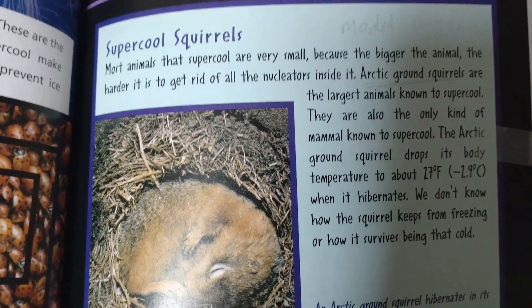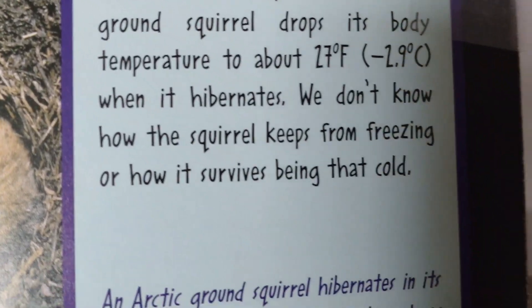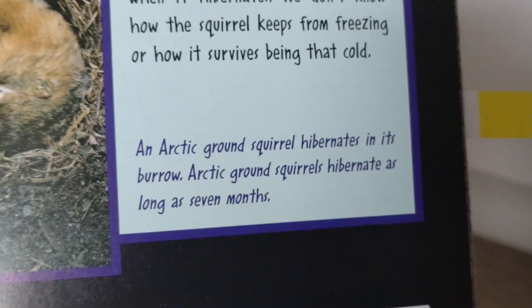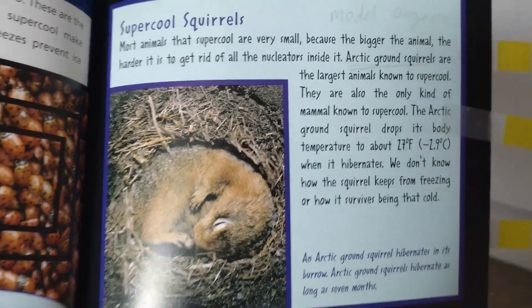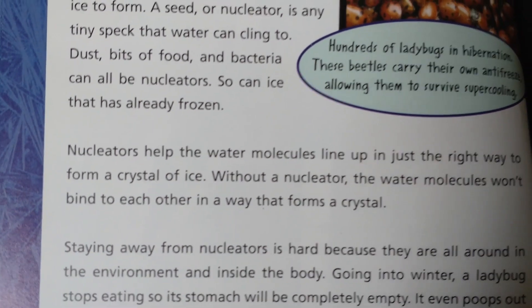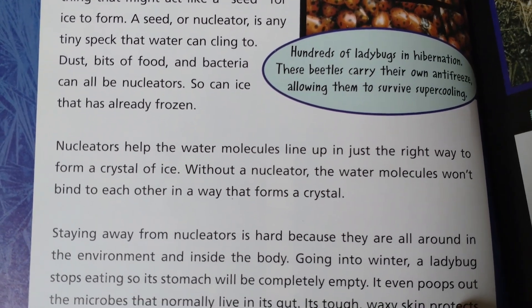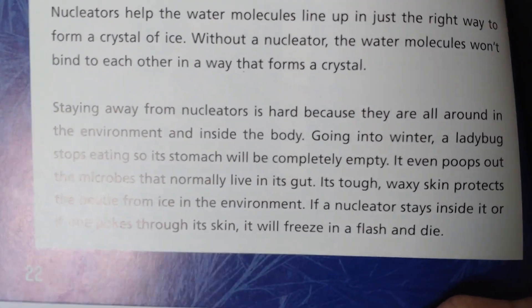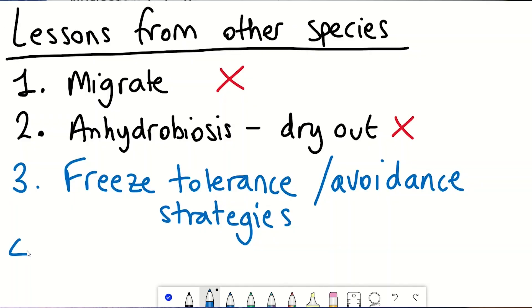One species definitely worth investigating are arctic squirrels — the largest animals known to supercool. For large animals, supercooling is harder because you want to prevent ice crystals from forming, and ice crystals form in the presence of so-called nucleators — things like dust, food particles, and bacteria — which help water molecules line up. The bigger you are, the more nucleators you have.